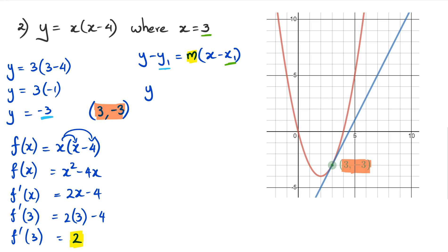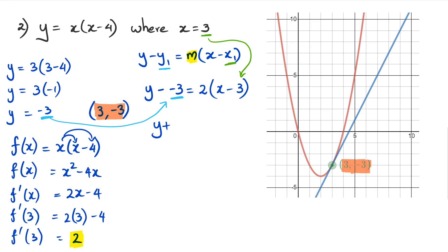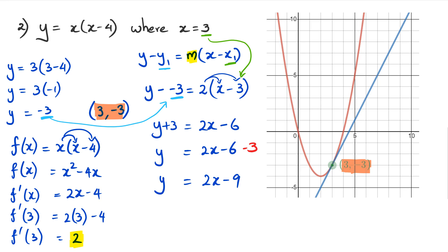So I'm going to substitute it in: y minus negative 3 equals 2 times (x minus 3), taking the negative 3 from the y-coordinate and the positive 3 from the x-coordinate. Now y minus minus 3 becomes y plus 3 equals 2x minus 6. Then y equals 2x minus 6, and when the positive 3 comes to the other side it becomes minus 3, so the equation of the tangent is y equals 2x minus 9.